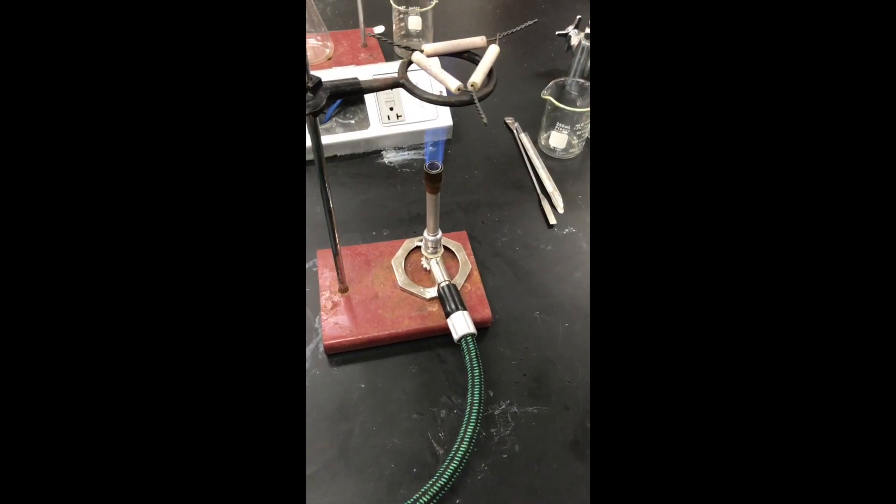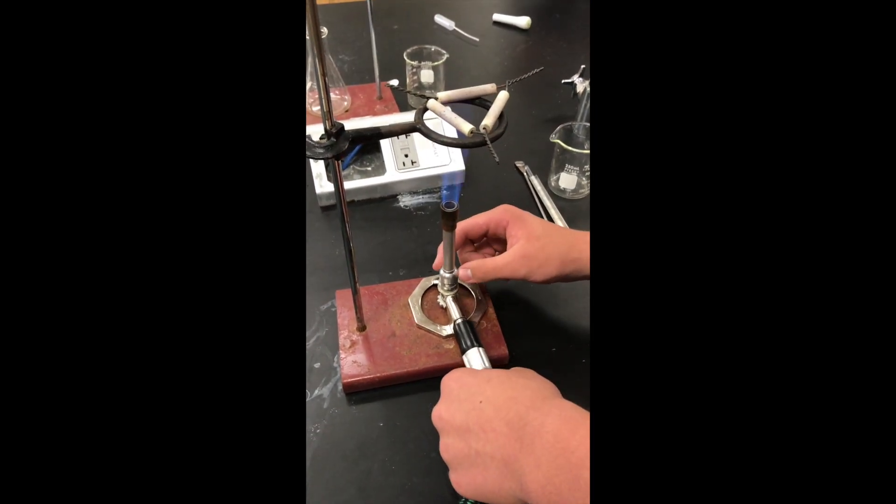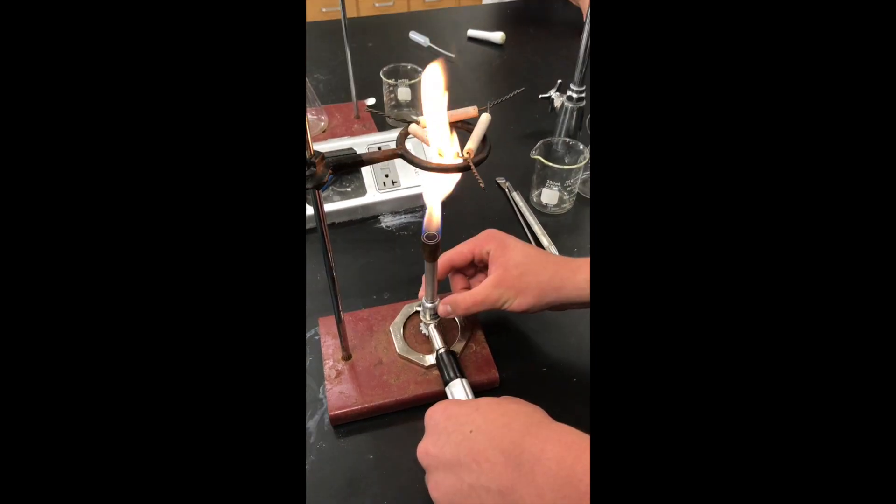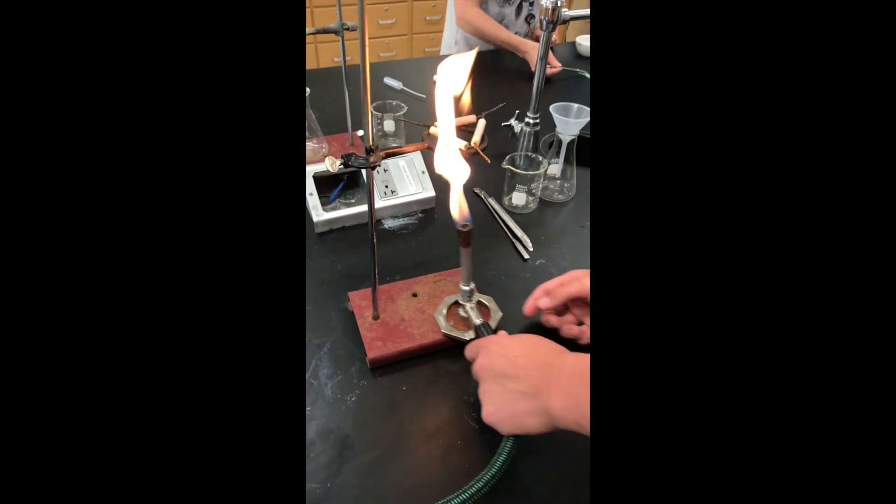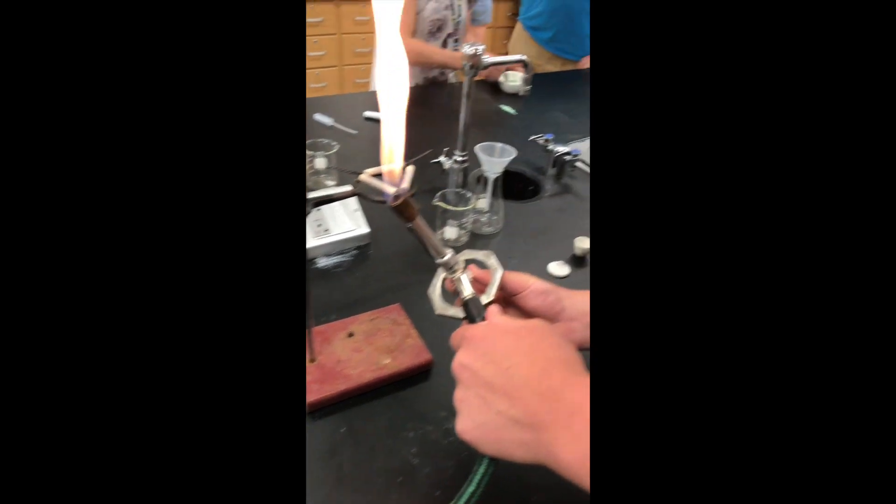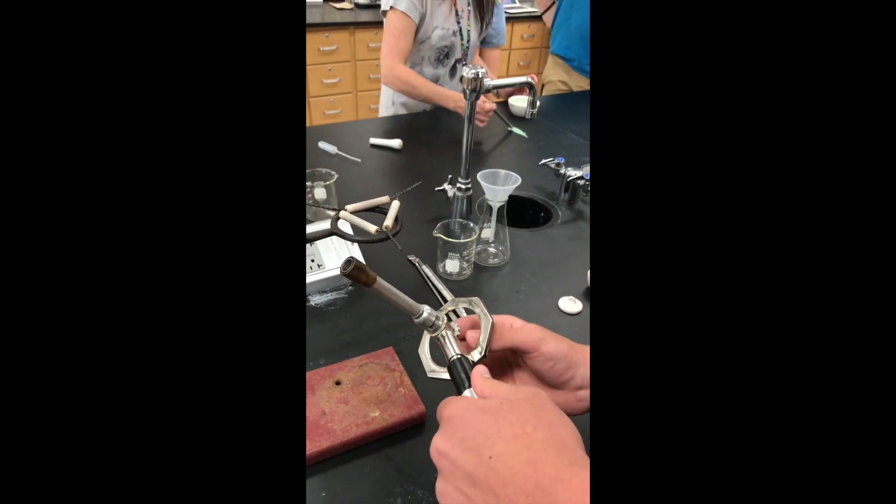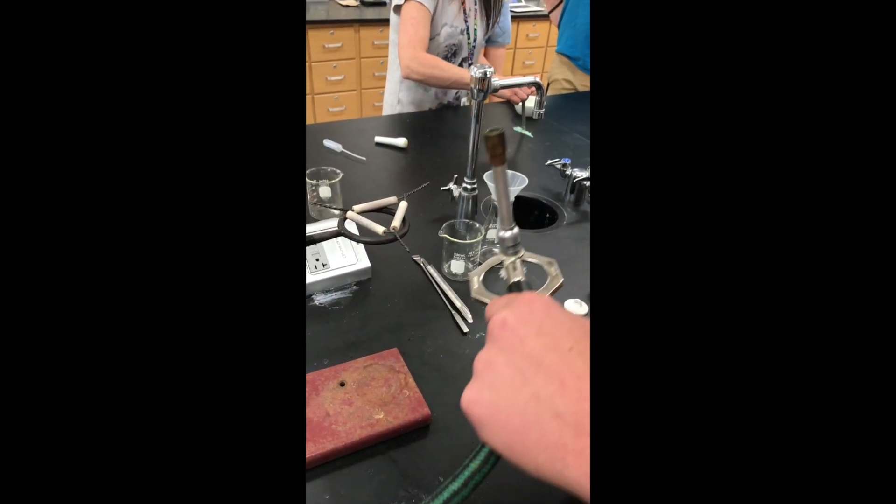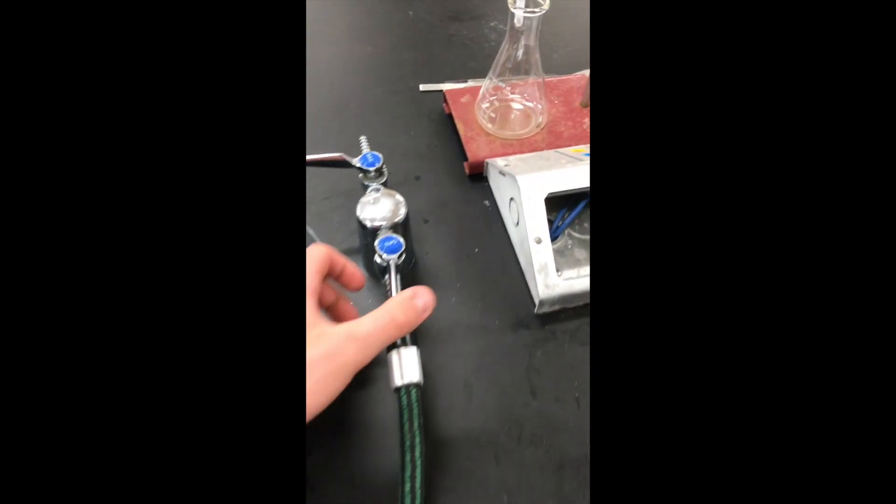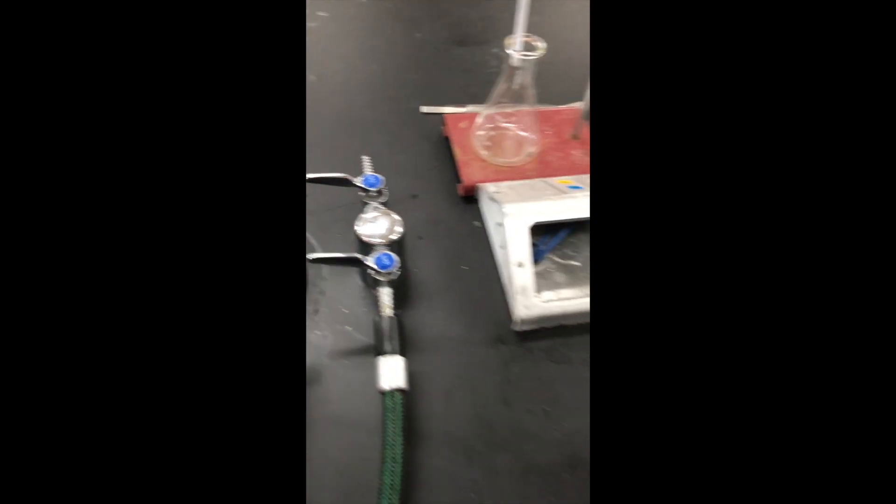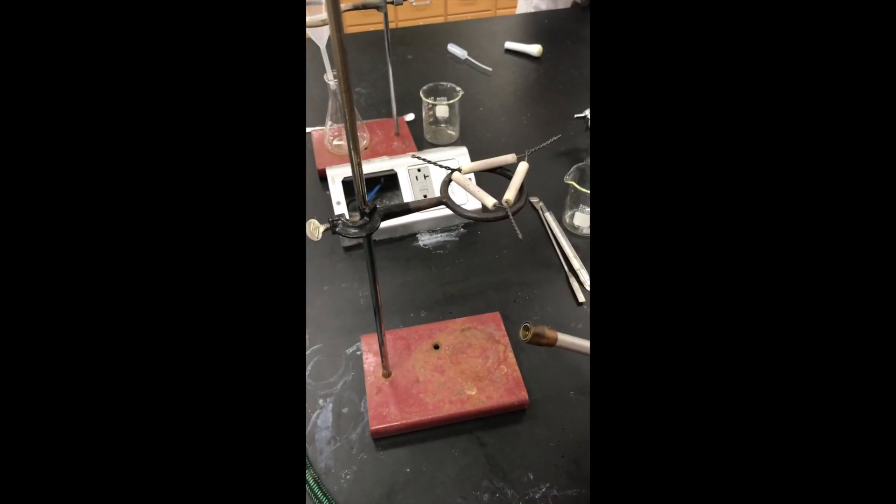Turn off your Bunsen burner and disassemble your set. You will turn it left to suck the oxygen, and then you will turn off the Bunsen burner on the bottom. Make sure that it is cut off, and then you will turn the gas off. And it is all disassembled.